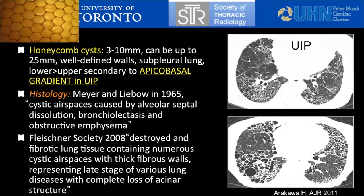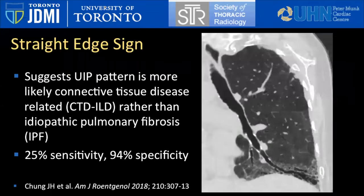A few more facts about honeycomb cysts: they can be single-layer as they develop and then progress to multi-row cysts as fibrosis progresses. They're often seen with an apical-to-basal gradient because that is the distribution of fibrosis in usual interstitial pneumonia. We see them because of increasing lung destruction with complete loss of acinar structure. Another sign is the straight edge sign, which suggests that when you're dealing with a UIP pattern of fibrosis, it's more likely secondary to underlying connective tissue disease rather than idiopathic pulmonary fibrosis (IPF).